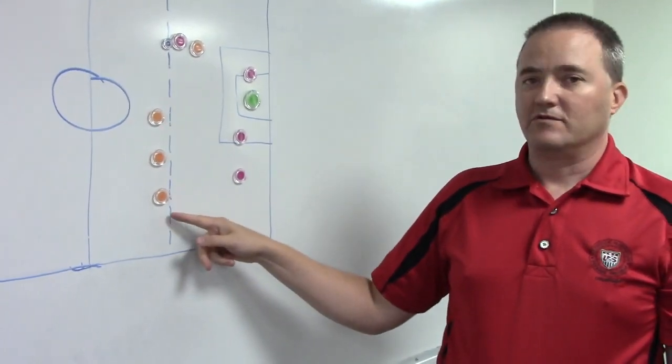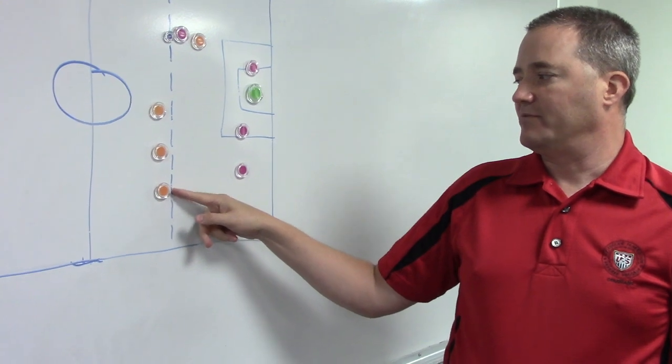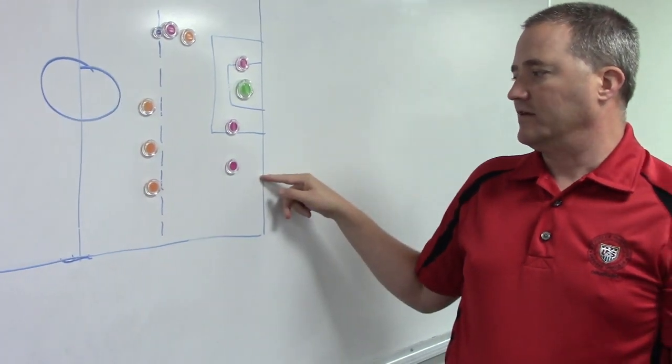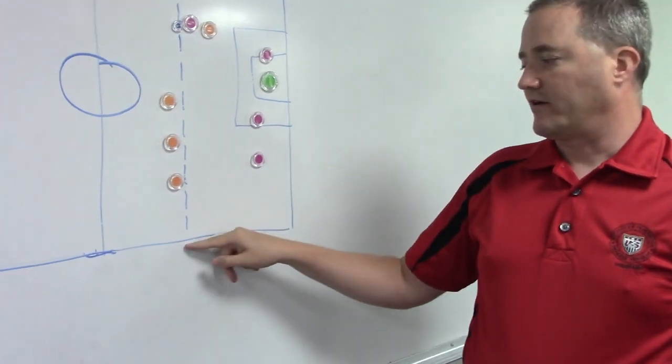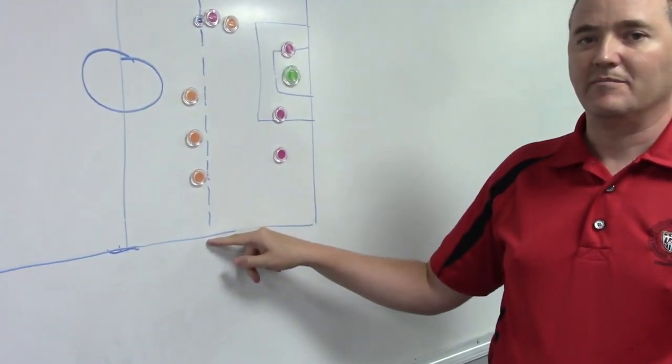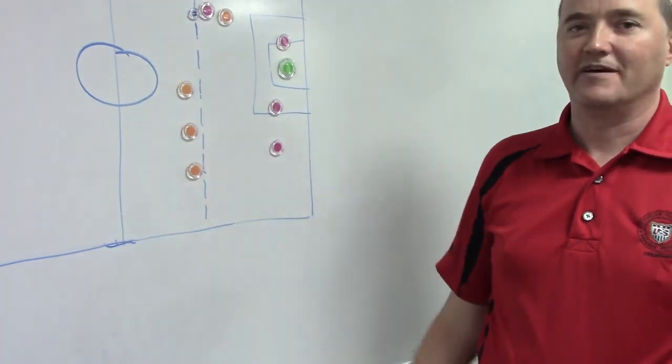With the build-out line rules, you can only be offside again from the build-out line to the goal area. So our assistant referees will never cross the build-out line because they will not need to call offside here in the midfield area.